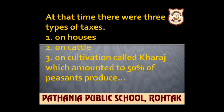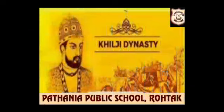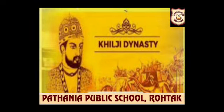A large part of the subcontinent remained outside the control of the Delhi Sultans — it was difficult to control distant provinces. Even rulers like Alauddin Khalji and Muhammad Tughlaq could force their control in these areas for only a short duration. With this, this chapter is over.